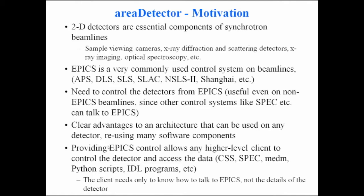The motivation for area detector is probably familiar to most of you: two-dimensional detectors have become essential components of what we do on synchrotron beamlines, from sample viewing cameras to X-ray diffraction and scattering detectors, X-ray imaging, optical spectroscopy — all sorts of things where at the beamline we need to be able to use two-dimensional detectors.